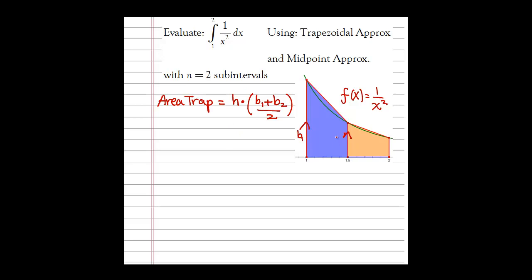Base 1 and base 2 are the two parallel sides of our first trapezoid. The height of our trapezoid is actually the width of our sub-interval, which is delta t. So we compute delta t as (2 minus 1) divided by the number of sub-intervals. In this case, we're doing two trapezoids, so n equals 2, giving us a width of one half for each interval.